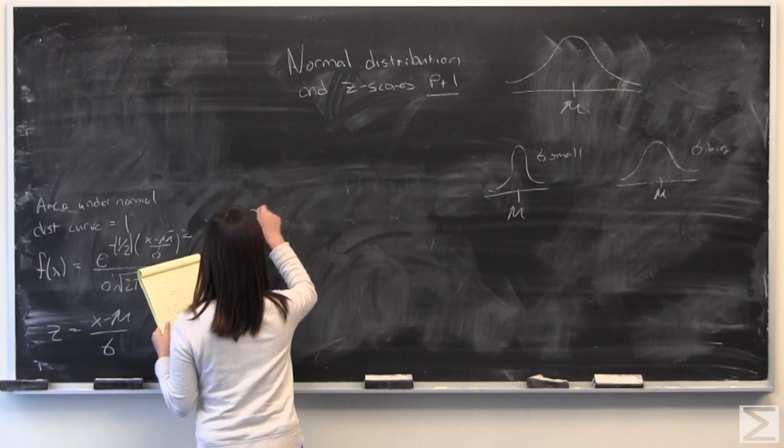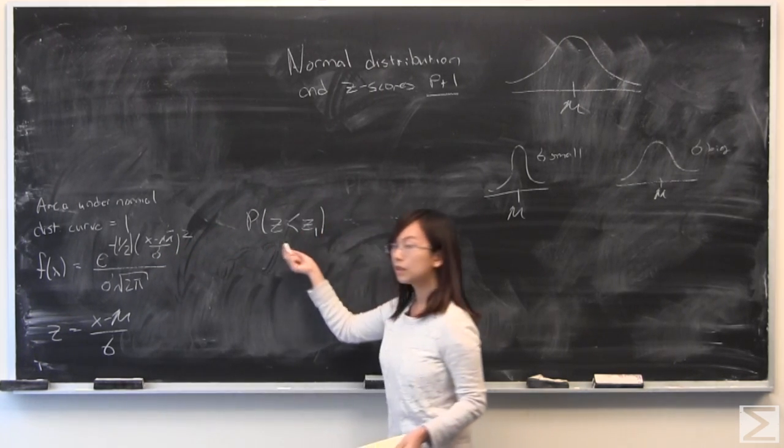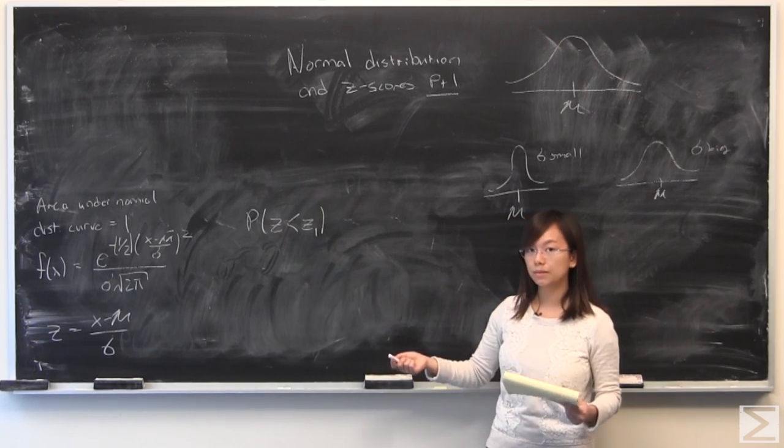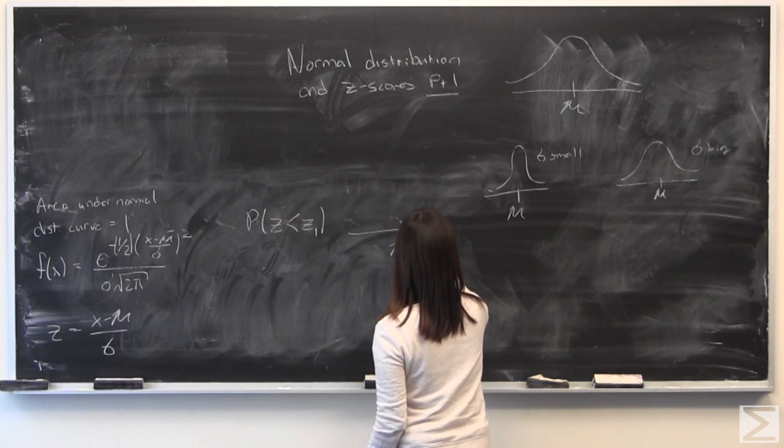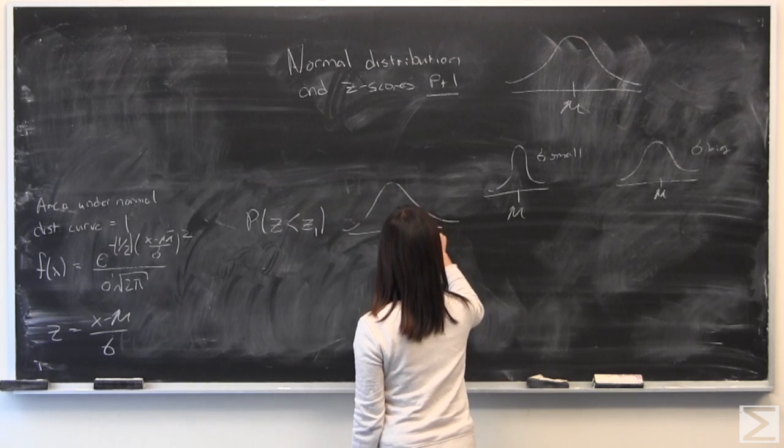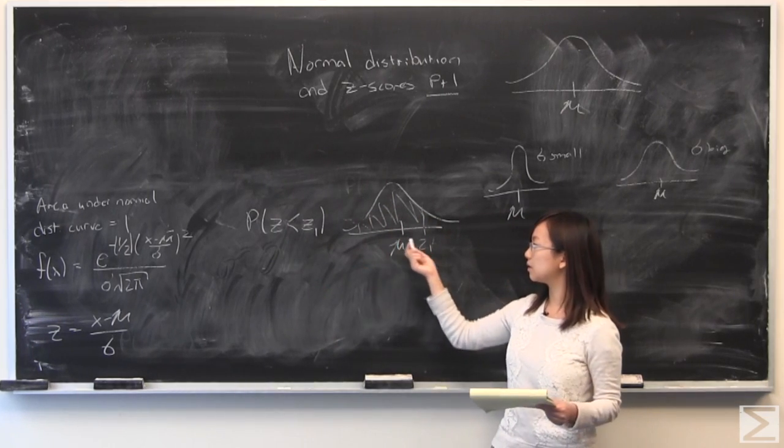So I'm going to start putting these together in terms of what's often asked. And so P(z less than z1), it basically means that what is the probability of finding in this curve, some z1. The area under this will give the probability of finding some z less than z1.